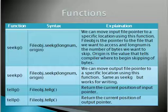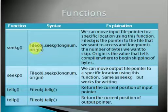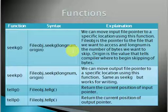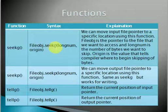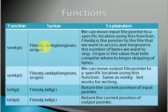First, let's start with the seekg function. We can use this function to move the input pointer to a specific location. The syntax is: fileObject.seekg(longNum, origin), where fileObject is the file we are going to access, longNum means the number of bytes, and origin means the position from which to skip those bytes.